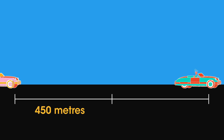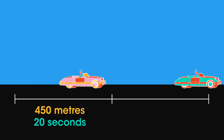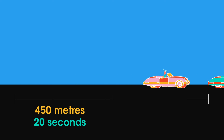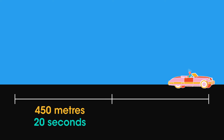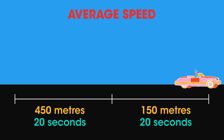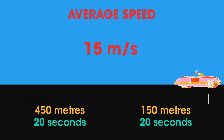The car travels 450 meters for the first 20 seconds, but then it hits some traffic and has to slow down — it then travels just 150 meters for the next 20 seconds. Can you work out the average speed of the car? Pause the video and give it a go. The answer is 15 meters per second — did you get it right?